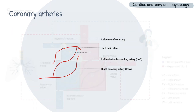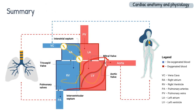In summary, the heart is a muscular pump, separated into the left and right by the septa, atria from ventricles by the valves, which also control the direction of blood flow, controlled by a conduction system, and supplied by a network of coronary arteries.